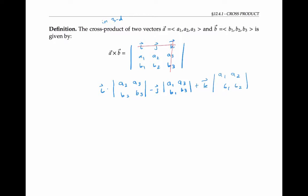Notice that the positive and negative signs alternate: plus i, minus j, plus k. Now we evaluate these 2x2 submatrix determinants by multiplying down the diagonal from top left to bottom right, and then subtracting the other diagonal. In other words, we get i times (a2·b3 − b2·a3), minus j times (a1·b3 − b1·a3), plus k times (a1·b2 − b1·a2).